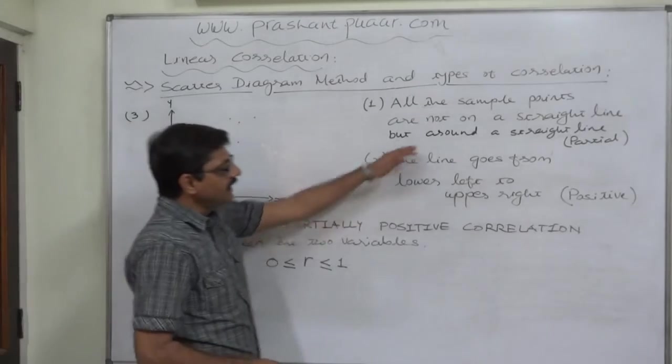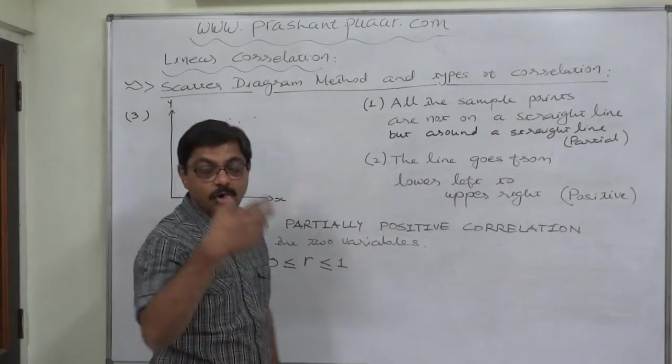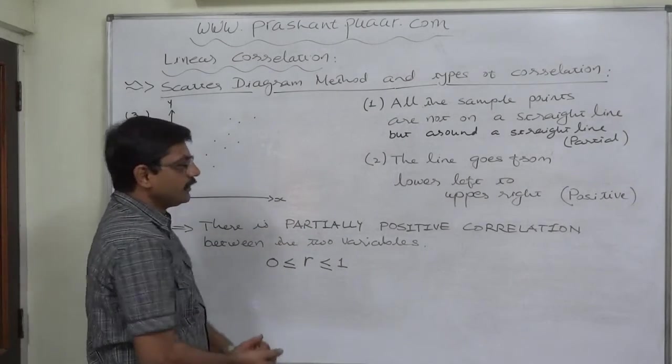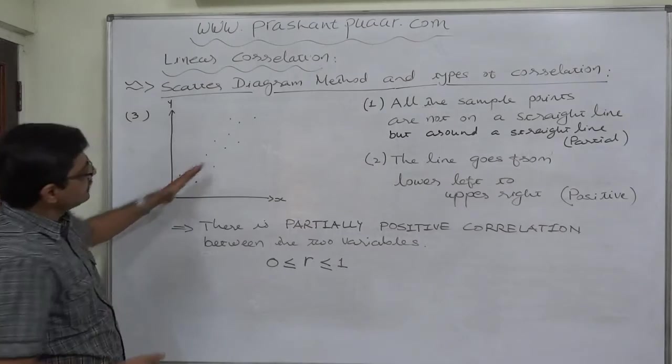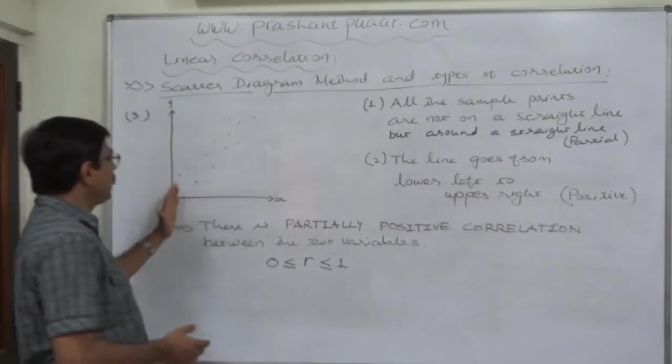This type of situation suggests a partial relationship—not perfect but partial. If we imagine the straight line within the sample points, the line goes from lower left to upper right, which suggests the positivity of the relationship.